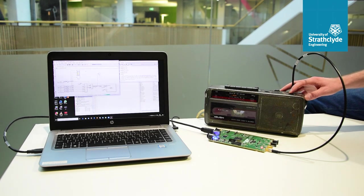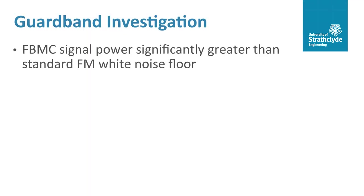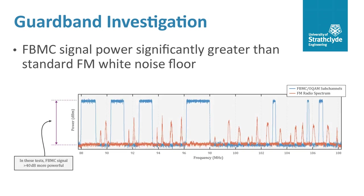Tuning to parts of the spectrum where the FBMC signal is broadcasting, a buzzing noise is heard from the FM receiver's speaker. Because the energy at these frequencies is considerably greater than the standard white noise floor normally found between FM stations, the buzzing noise is quite loud.